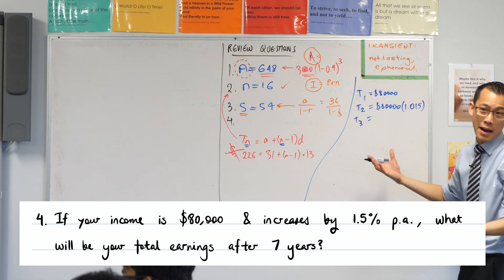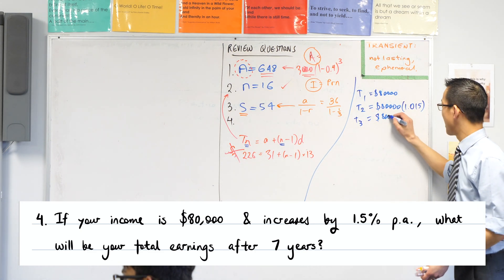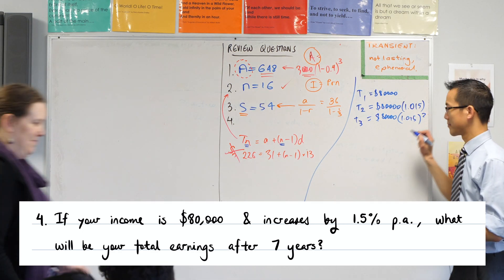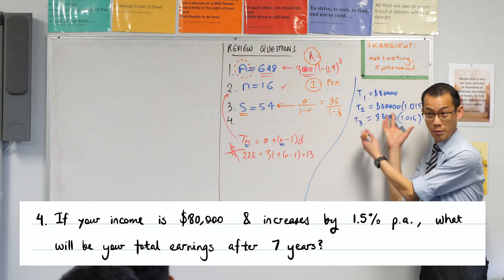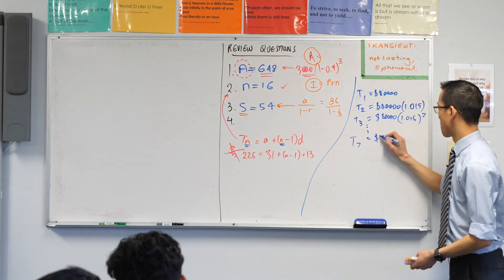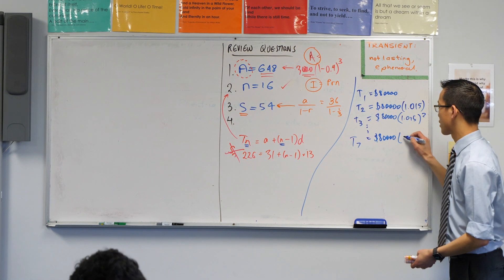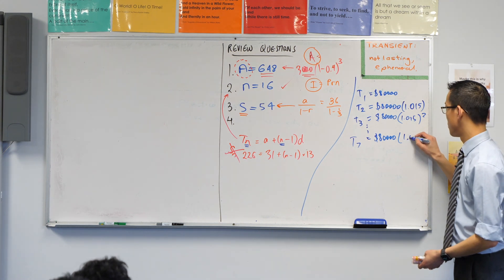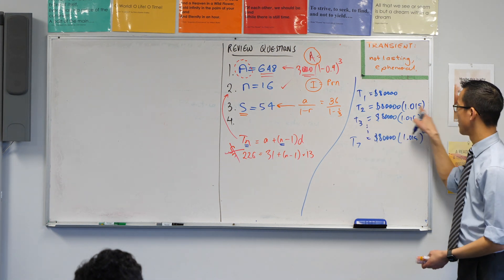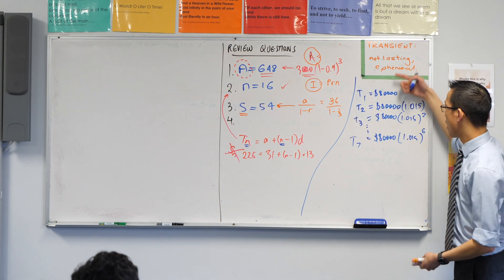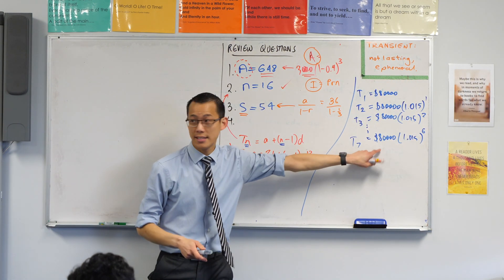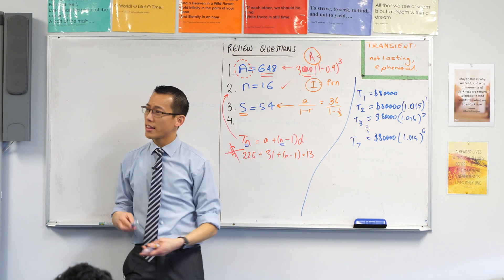I'm trying to establish a pattern here. What's it going to be? 80,000. I've got three terms, and then I'm going to say, well I'm going to go all the way to the seventh year. I can follow the pattern. It's going to be 1.015. How many of them? Six. It's one less, isn't it? One less than two. Now I want the total earnings—that's everything all added up. Several of us just worked out this last one here.